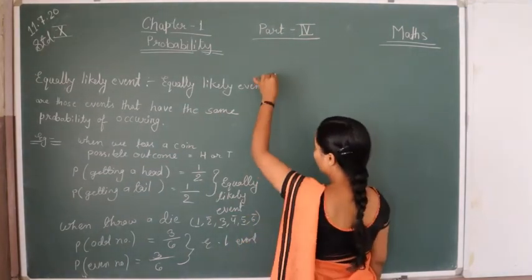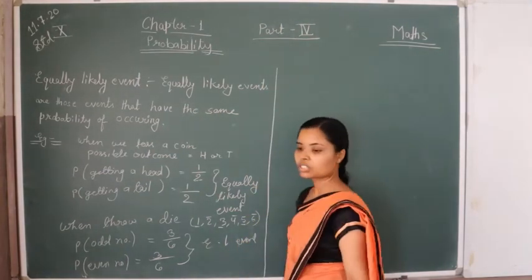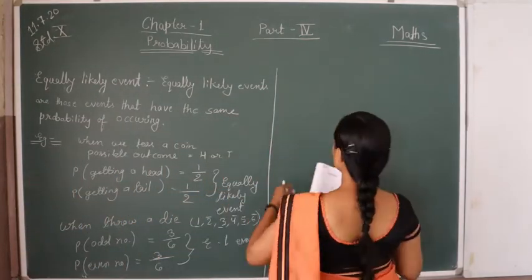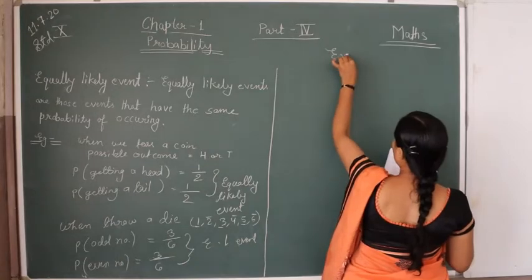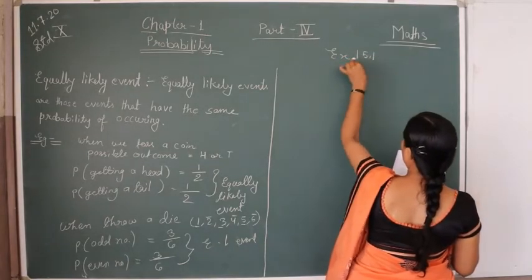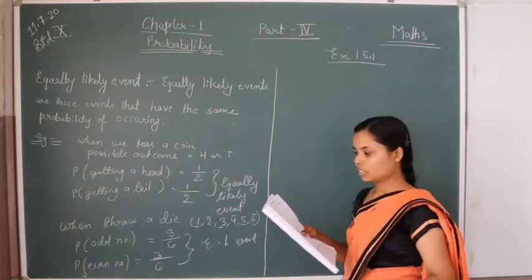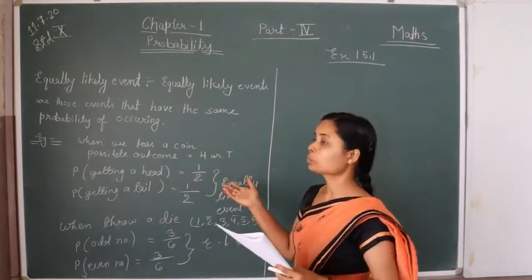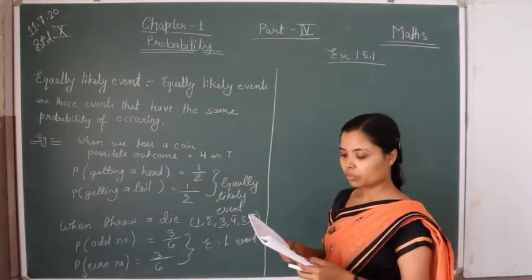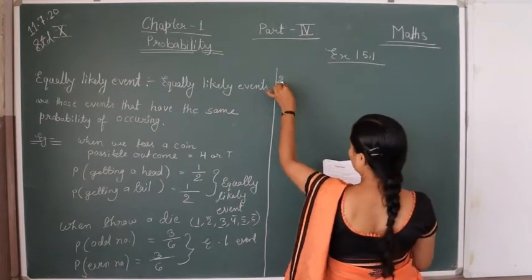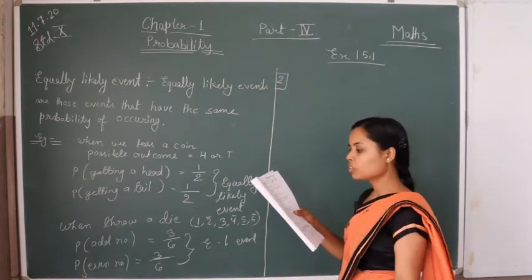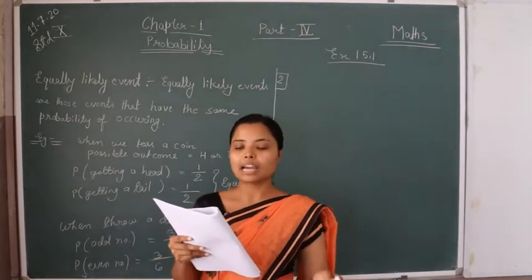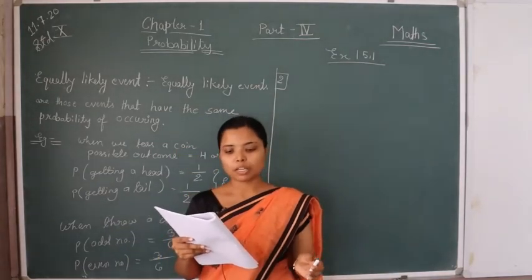I hope you understand this concept. Now we will move to exercise 15.1. The first question is fill in the blanks, which I explained in part 3. So we will look at question number 2: which of the following experiments have equally likely outcomes? Explain.